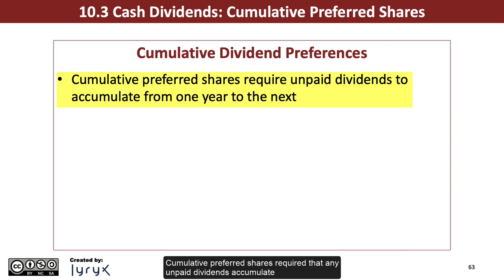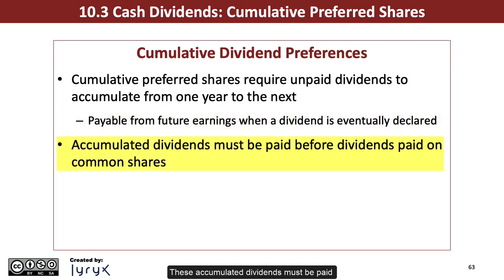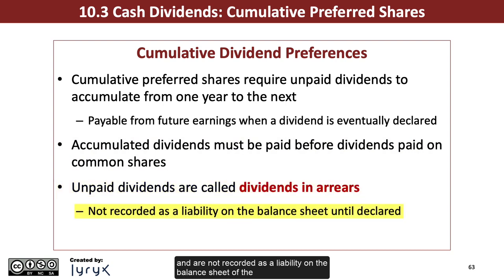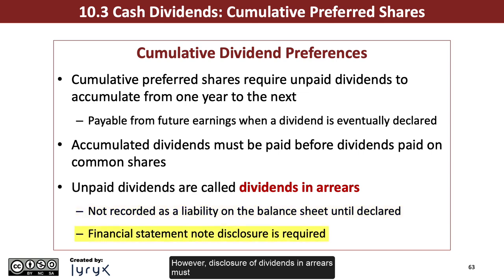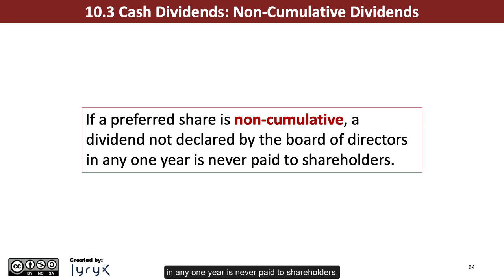Cumulative preferred shares require that any unpaid dividends accumulate from one year to the next and are payable from future earnings when a dividend is eventually declared by a corporation. These accumulated dividends must be paid before any dividends are paid on common shares. The unpaid dividends are called dividends in arrears and are not recorded as a liability on the balance sheet until they have been declared by the board of directors. However, disclosure of dividends in arrears must be made in a note to the financial statements. If a preferred share is non-cumulative, a dividend not declared by the board of directors in any one year is never paid to shareholders.